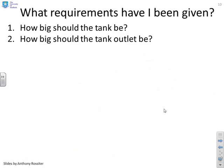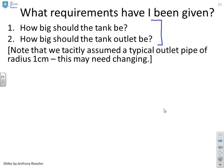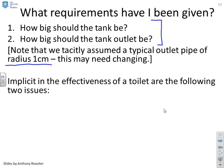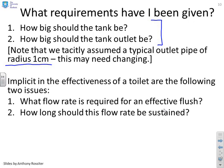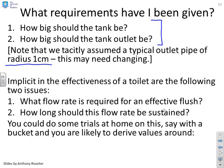Now, let's have a look what requirements are going to be given. The actual question was, how big should the tank be? And how big should the tank outlet be? And we note here we did cheat a bit because on the previous slide we put in a radius of 1 centimeter for the outlet pipe. Now, you can change that, OK? But just be aware at the moment we've put that assumption in and that will affect where we go. Now, implicit in the effectiveness of a toilet are the following two issues. What flow rate is required for an effective flush? And how long should this flow rate be sustained for the flush to be effective? Now, what you could do is you could go home and you could get yourself a bucket, a nice big bucket, and you could practice very crudely with different flow rates, different lengths of flow rates and so on, and get an impression of what sort of flow rates are needed, what sort of lengths of flow rates are needed. And basically, by trial and error, you can get to a point that says, this sort of flush consistently will deliver what I want.